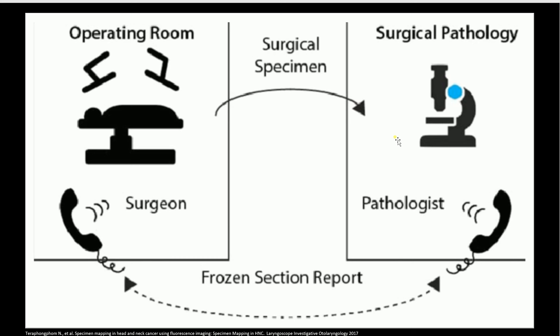If the margin is positive, then the pathologist will say there's still tumor in the patient and the surgeon needs to excise more tissue. Whatever the case may be, the pathologist will give a preliminary diagnosis and call that back to the surgeon, or go to the operating room and speak to the surgeon directly. Either way, the pathologist will communicate the results of the preliminary diagnosis of the specimen to the surgeon in the operating room.